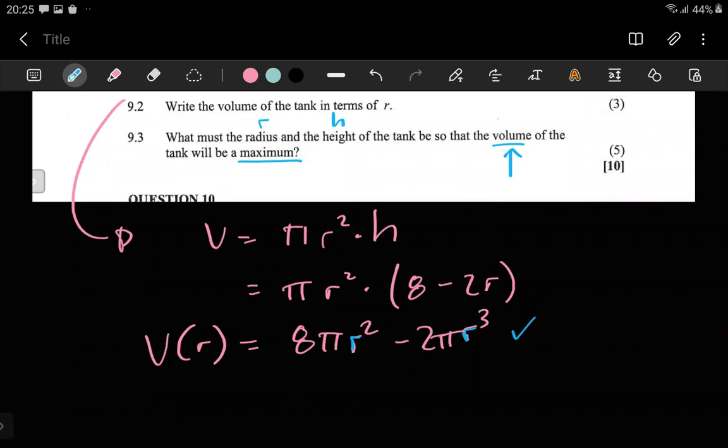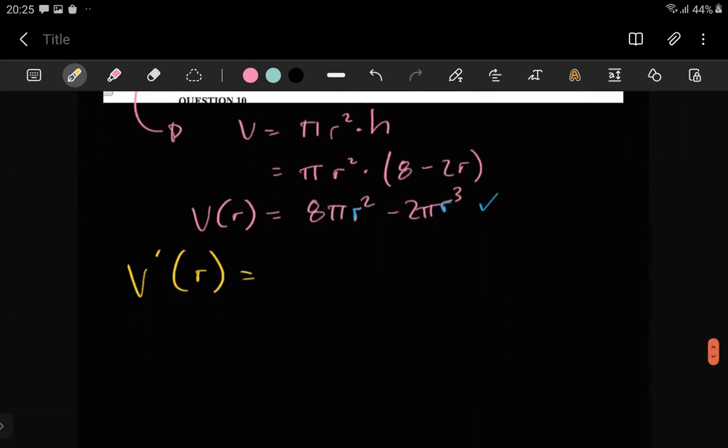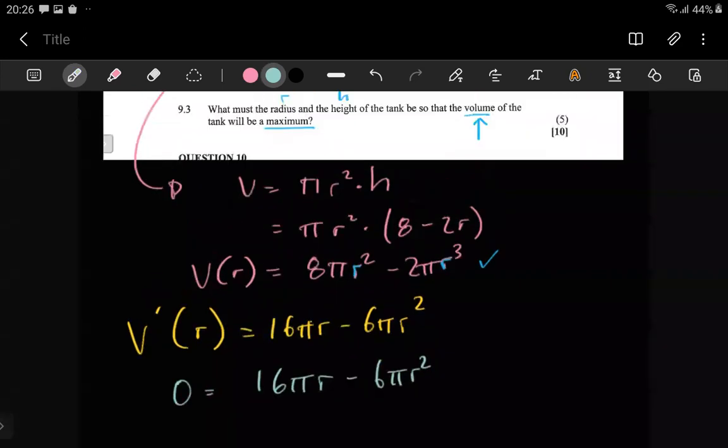We say regardless of what you may be thinking, anytime they mention maximum or minimum you're going to take the equation you have and differentiate once. So it's going to be 2 right here, multiplying by 8π you're going to have 16πr. Then here 3 times negative 2π you're going to have negative 6πr². You've differentiated.